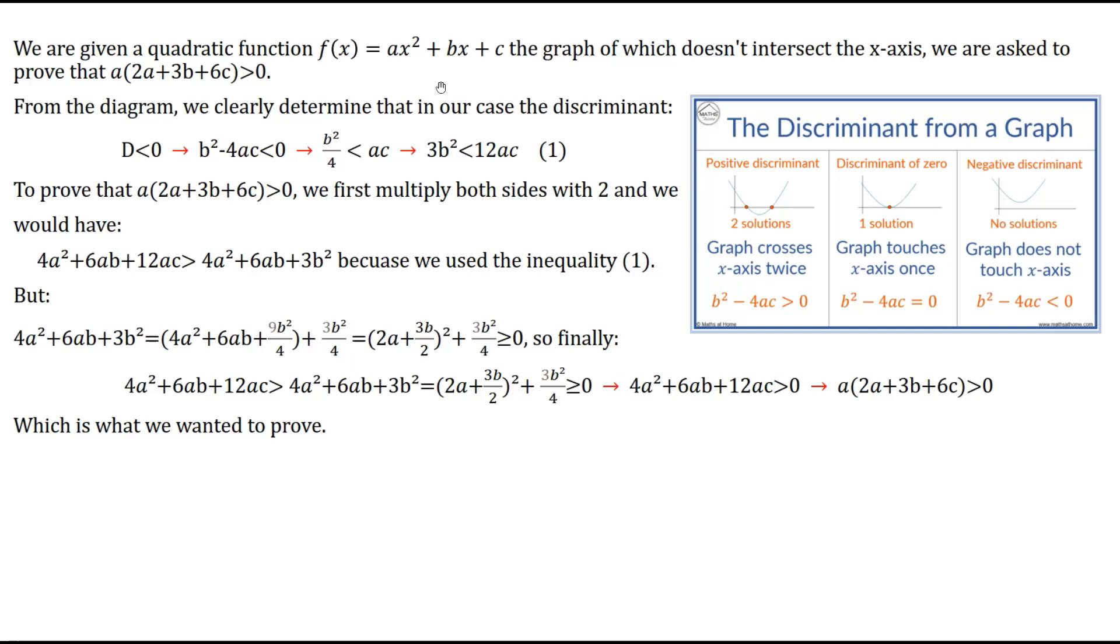Now, first of all, the graph doesn't intersect the x-axis. What does that mean? This, as the majority of you might know, means that the discriminant of the second degree equation ax² + bx + c is negative.